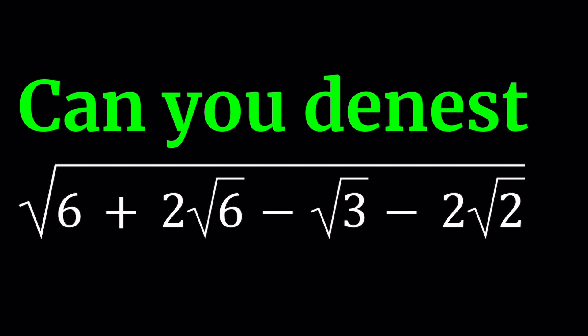A nested radical is a radical that contains another radical, and this is an example, because this radical contains actually three radicals: 2 root 6, root 3, and 2 root 2.